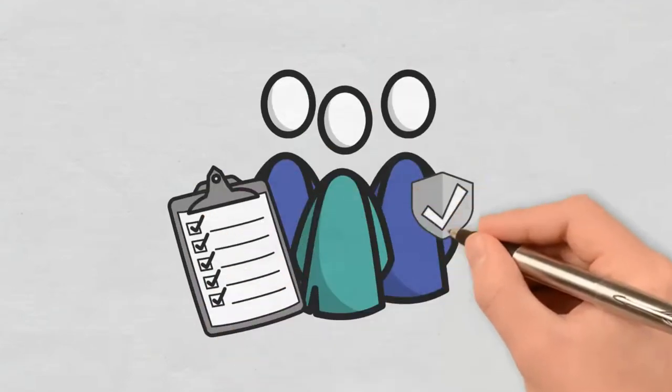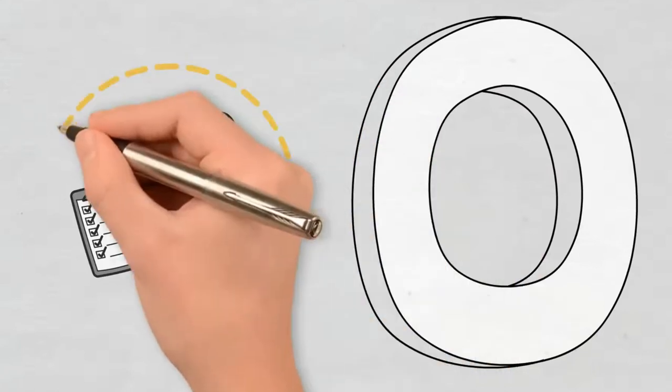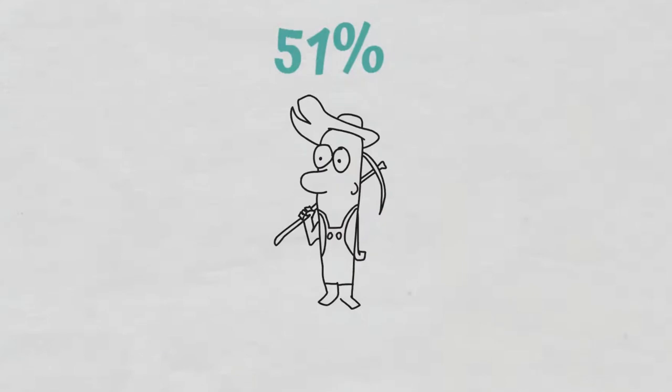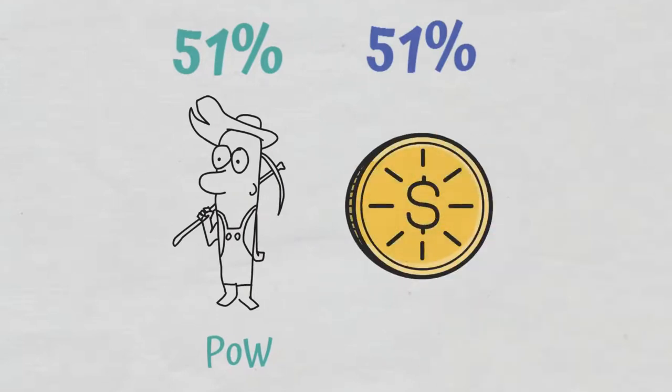With Proof of Activity, the chances of that happening fall to near zero. This is because Proof of Activity adds another layer of protection against such attacks. For a bad actor to gain control, they would need to have at least 51% of the total mining power, like in Proof of Work, plus at least 51% of the coins that are staked in the network, like in Proof of Stake.